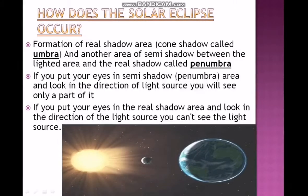How does the solar eclipse occur? Formation of real shadow, cone shadow called umbra, and another area of semi-shadow between the lighted area and the real shadow called penumbra. If you put your eyes in the semi-shadow area and look in the direction of the light source, you will see only part of it.